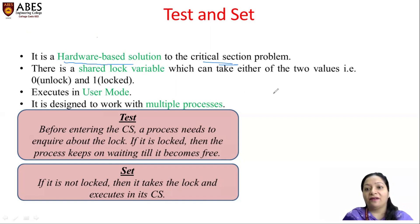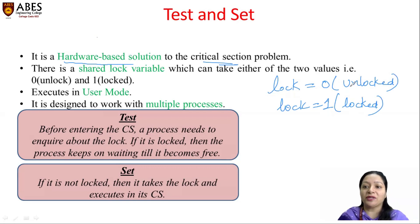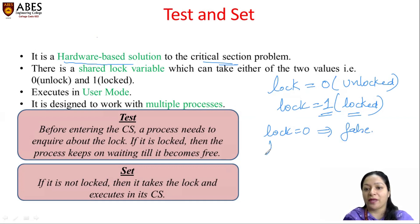In this solution, we have only one shared variable — the lock variable — whose value can be 0 or 1. Zero means it is unlocked: no process has acquired the lock and no process is currently executing in the critical section. Whereas when the value of the lock variable is 1 and it is locked, that means some process is currently executing in the critical section. Lock value 0 corresponds to false and lock value 1 corresponds to true.